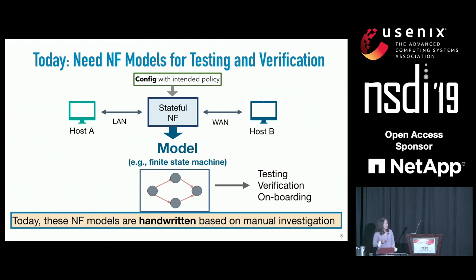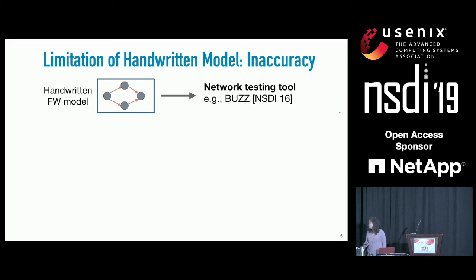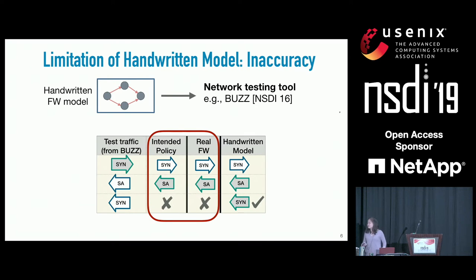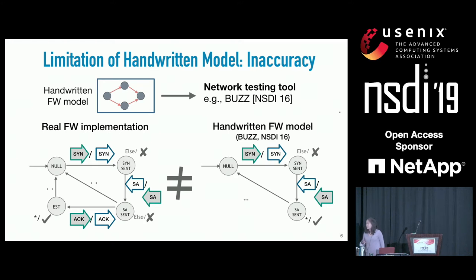Unfortunately, today these NF models are handwritten based on manual investigation, and they have a number of issues. First, they're likely to be very inaccurate, affecting the results of testing and verification tools. Suppose I'm a network operator who wants to check whether my policy is implemented correctly using a testing tool called Buzz. This tool takes a handwritten firewall model as input. Running Buzz, we surprisingly found that the tool flagged the policy as violated, as the output of the handwritten model did not match that of the real firewall. However, we found that the real firewall is actually adhering to the intended policy.